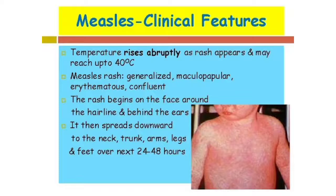The rash comes with temperature — the patient has a fever above 40 degrees Celsius, and the temperature rises abruptly as the rash appears. The measles rash is described as a generalized maculopapular erythematous rash. These are the key terms that will appear in your exam questions.